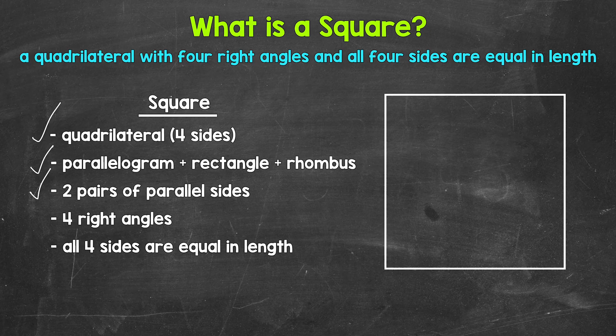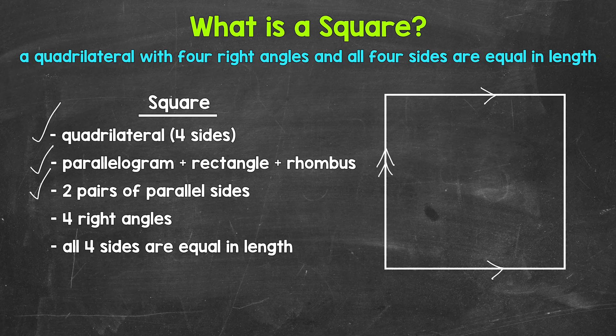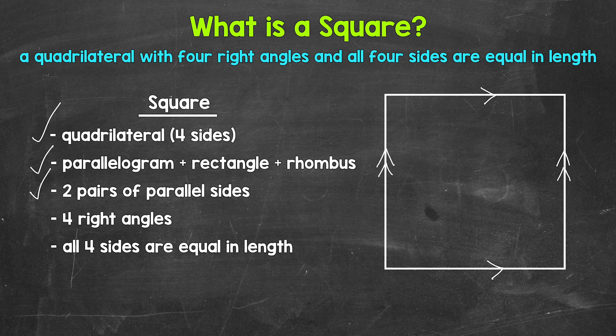So let's mark the two pairs of parallel sides using arrow symbols. We'll have one pair of parallel sides right here. We'll use one arrow on each of those sides to show that they are parallel. And then as far as the other pair of parallel sides, we will use two arrows. So again, squares have two pairs of parallel sides. Squares are parallelograms.